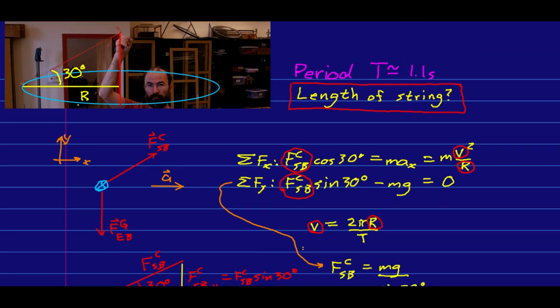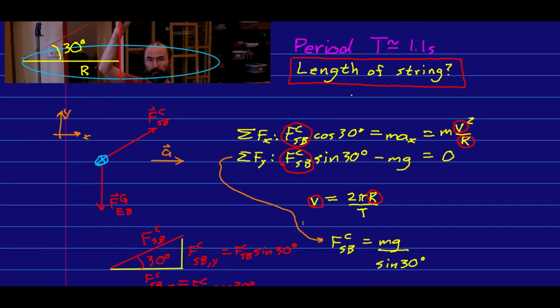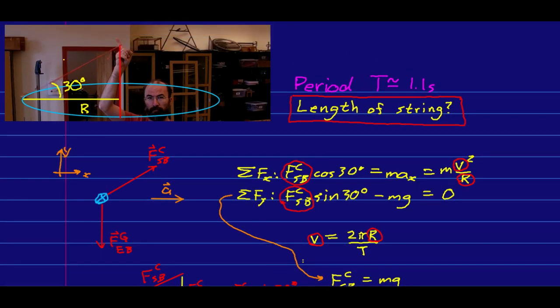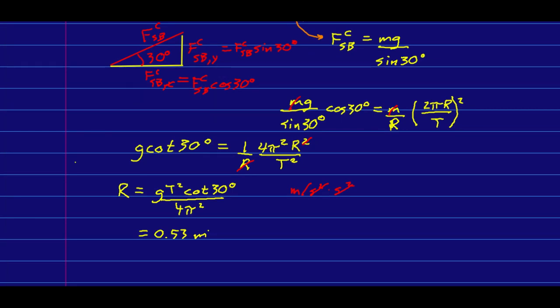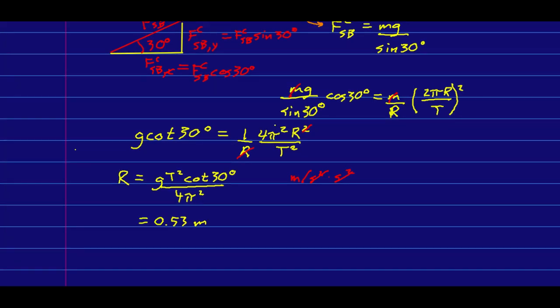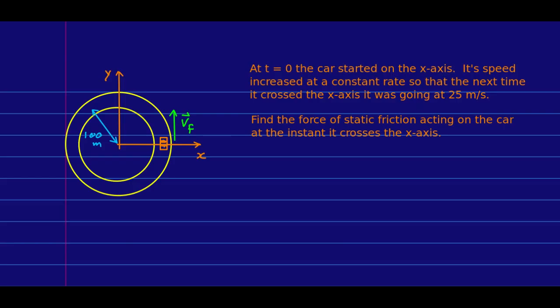I can now get the length of the string from the fact that r is just l cosine 30 degrees. And so I could now use this to get the length of the string. But I'm going to say, with this, we're done.